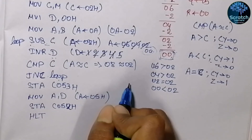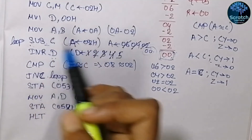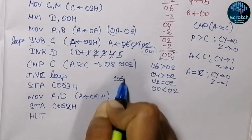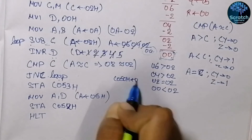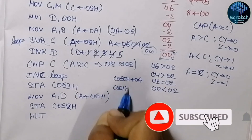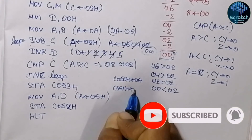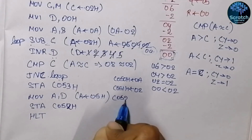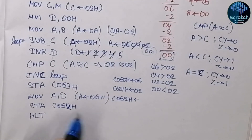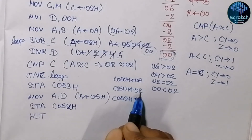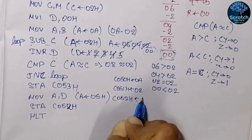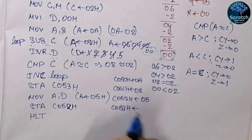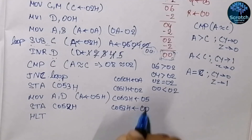Looking at the memory layout: the dividend is stored at C050 hex — 0A hex. At C051 hex we store the divisor — 02 hex. At C052 hex we store the quotient — 0A divided by 02 gives 05 hex. At C053 hex we store the remainder, which in this case is 00.